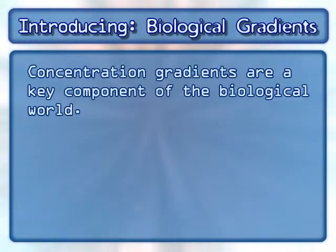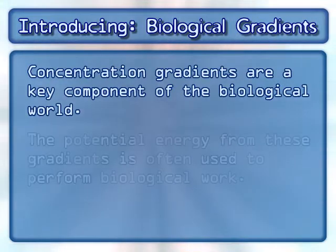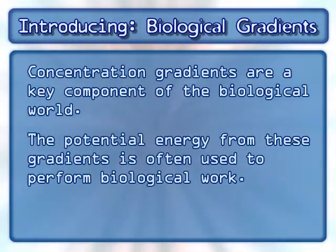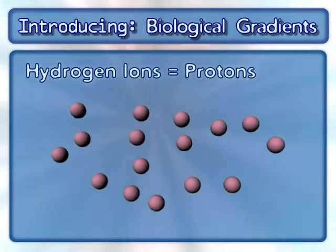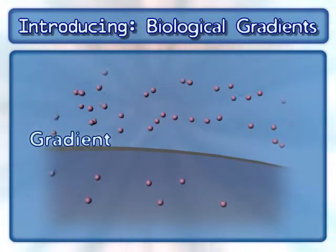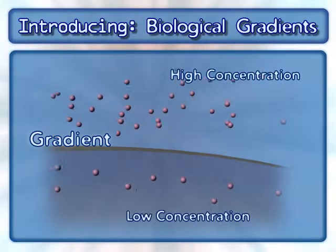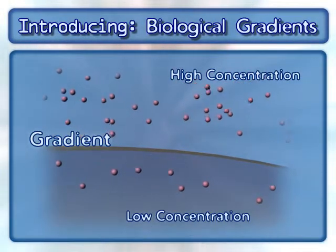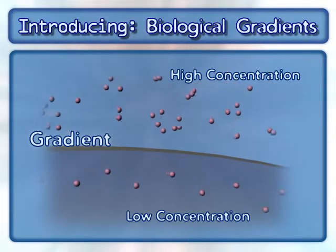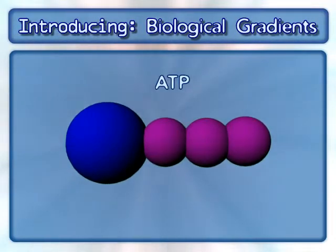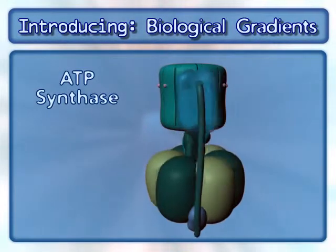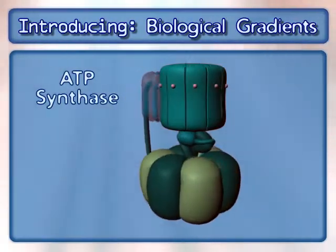Concentration gradients are a key component of the biological world. The potential energy from these gradients is often used to perform biological work. Here we will focus on hydrogen ion concentration gradients. Hydrogen ions are also known as protons. A gradient exists when there is a higher concentration of a molecule in one compartment compared to a neighboring compartment. This animation will demonstrate how the potential energy that results from a hydrogen ion gradient uses ADP and inorganic phosphate, also known as Pi, to synthesize ATP. This process involves an enzyme complex called ATP synthase.